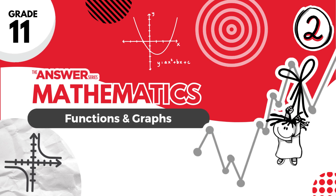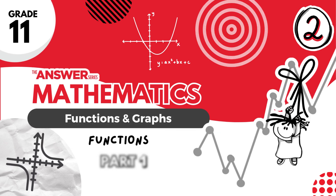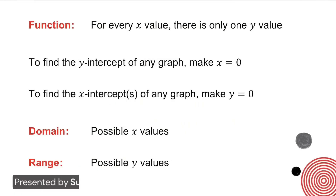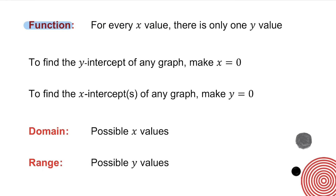Hello and welcome to a video on functions brought to you by the Answer Series. There are various words that you need to remember. A function: for every x value, there is only one y value. To find the y-intercept of any graph, you make x equal to 0, and to find the x-intercepts, make y equal to 0. The domain of a graph are the possible x values, and the range are the possible y values.